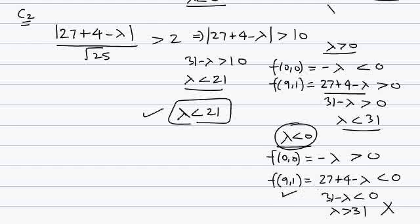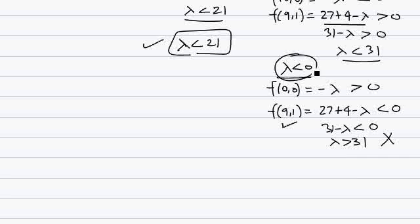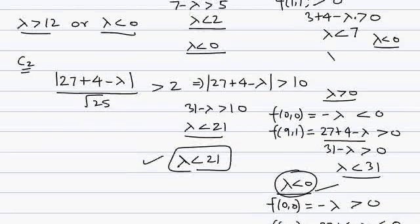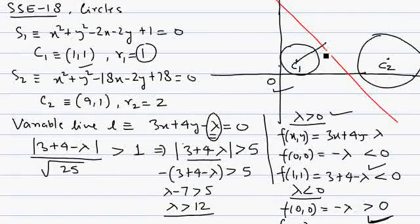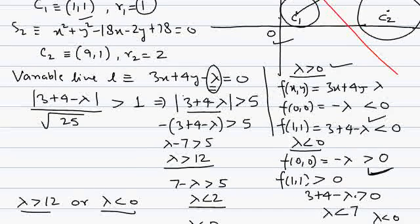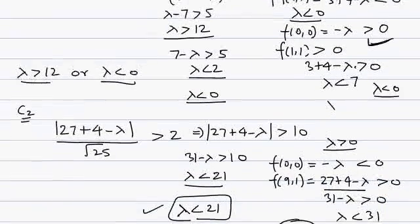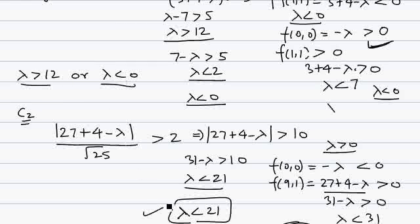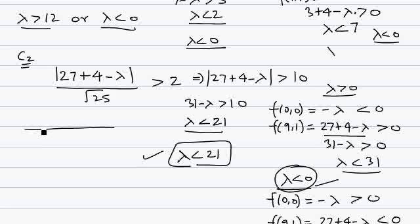The second case is not possible because for lambda less than zero, we need lambda greater than 31, which is a contradiction. Now combining both conditions: from the first condition on C1, we have two cases — lambda greater than 12 or lambda less than zero — and the second solution from C2 gives lambda less than 21. Lambda less than zero is not possible, so we combine lambda greater than 12 with lambda less than 21.